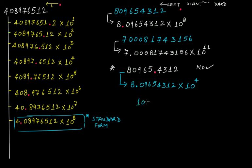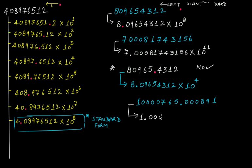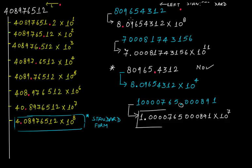Similarly, if your number is 10000076​5.000891, and I ask you to write this in standard form, the answer will be 1.0000076​5000891. By how many digits did we move towards the left? 1, 2, 3, 4, 5, 6, and 7 — because your decimal point was after the 5, so the answer is 1.0000076​5000891 times 10 to the 7th power. This is the standard form.